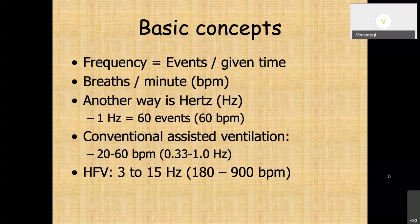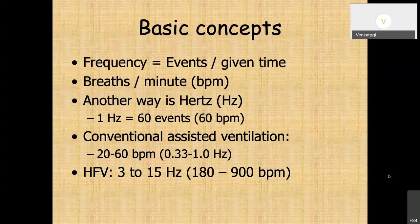Before getting into HFV, let's cover some basic concepts. Frequency means the number of events in a given time — the event here is a breath, so it's breaths per minute (BPM). Another way of expressing BPM is in hertz (Hz): 1 hertz equals 60 breaths per minute. In conventional ventilation we give rates of 20–60 BPM, equivalent to 0.33–1 Hz. In HFV, rates range from 3–20 Hz, equivalent to 190–1200 breaths per minute.